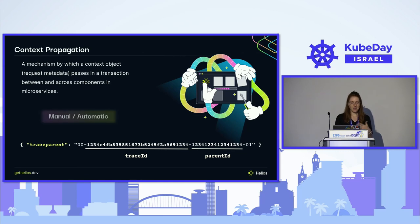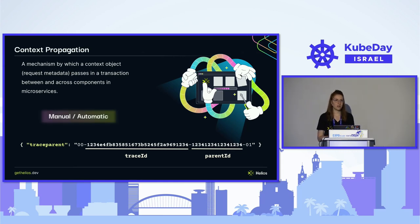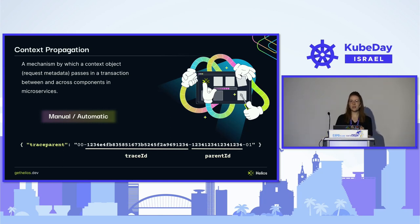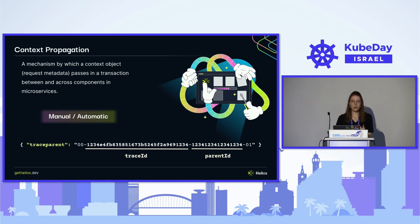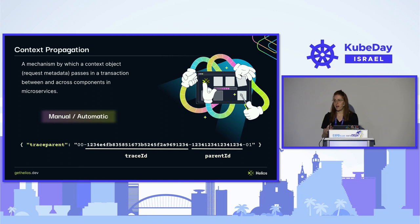OpenTelemetry allows context propagation in two ways: manual and automatic. Automatic means OpenTelemetry does this for us and we as developers don't need to take any action to make it happen.